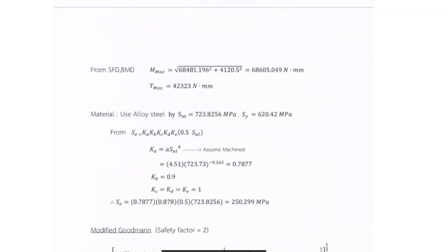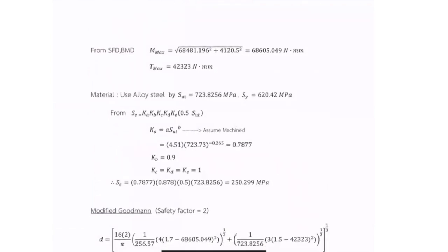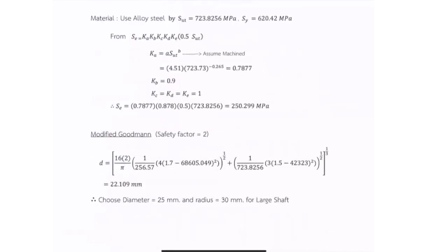The maximum moment is about 68,000 N·mm, torque maximum equal to 42,000 N·mm. Then we use Marin factor, endurance stress, it's about 250 MPa. And we have ultimate tensile stress of alloy steel is equal to about 700 MPa. Then we solve this by modified Goodman and find a minimum diameter is equal to about 22.109 mm. So we choose diameter in the small shaft is 25 and the last diameter is 30 for the last shaft.